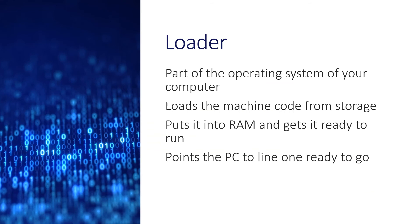Finally, let's say everything's gone smoothly — you've got a lovely executable file and now you want to run it. That's the job of the final bit of software we're going to talk about in this topic, and the clue is in the name: it's called a loader. It's part of the operating system, the basic system software of your computer. If you tell the computer to run a program, the loader will take all that machine code and put it into RAM, then point the program counter at the first line of the program and you're good to go.